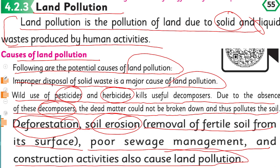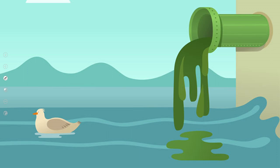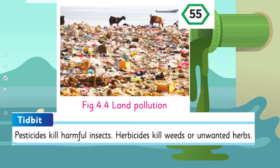Deforestation, soil erosion, removal of fertile soil from its surface, poor sewage management, and construction activities also cause land pollution. Here you can see an example of land pollution — bohut sari gandagi zameen pe padi hai, wahaan mukhtalif animals hain, aur is tariqa se ye bohut zyada harmful hai.